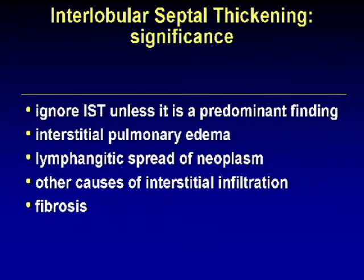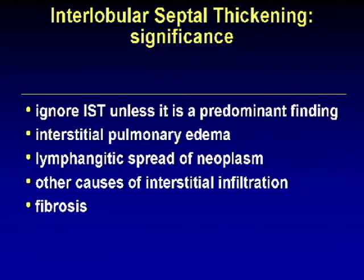As far as the significance of interlobular septal thickening on high-resolution CT: ignore it unless it is the predominant finding. Almost everyone will show a little interlobular septal thickening if they have an abnormal scan — it's of no value in diagnosis. Don't dictate it; don't do anything with it unless it's the predominant finding. If it is the predominant finding, the common causes are interstitial pulmonary edema and lymphangitic spread of neoplasm.